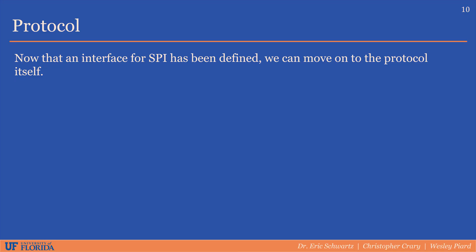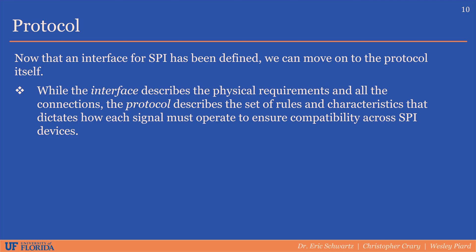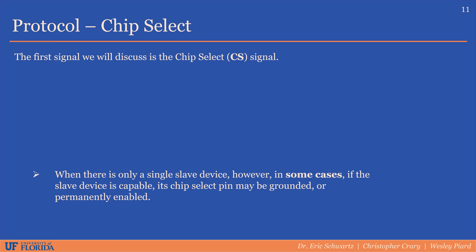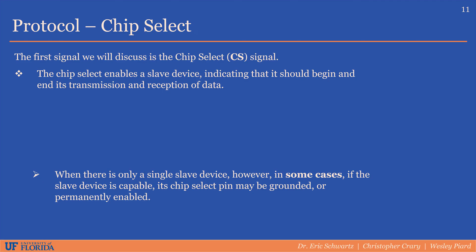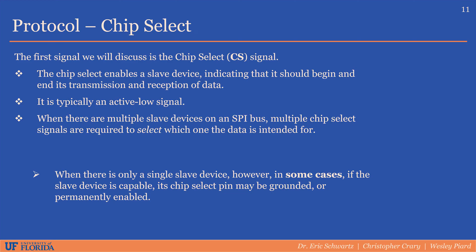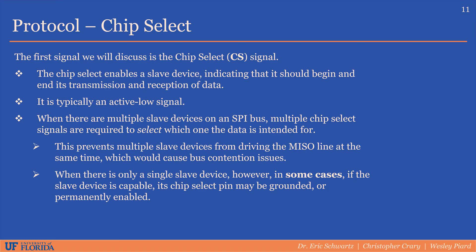Now that the physical interface has been defined, let's discuss the protocol. The interface describes physical requirements such as hardware connections and data directions, while the protocol describes the specific rules and parameters that dictate how each signal must operate for devices to communicate successfully. The chip select signal indicates when a slave device should begin and end its transmission and reception of data. It is typically an active low signal, held low during the period in which a slave device is enabled. Having multiple chip selects prevents multiple slave devices from driving the MISO line simultaneously, which would cause bus contention errors.